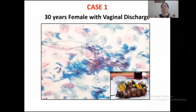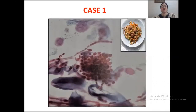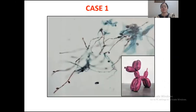Attempt the diagnosis. Case one was a 30-year-old female with vaginal discharge. This case has three pictures. In the center, the organ gives some resemblance to the picture shown in the inset on the right side. This is repeated across additional pictures of the same case, where the inset picture again serves as a clue to the diagnosis.